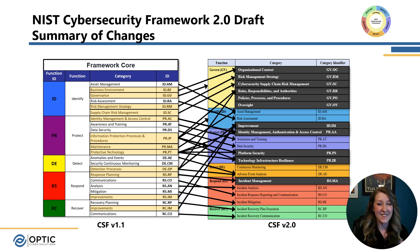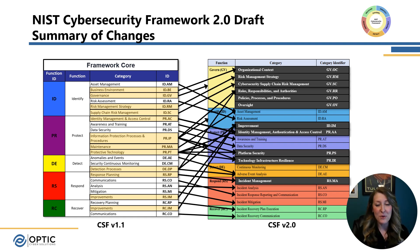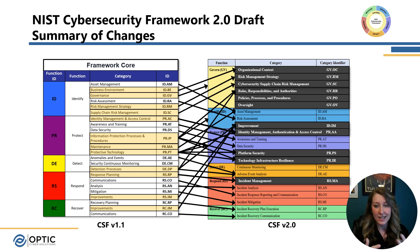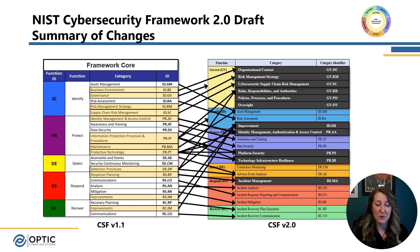Here I have the summary slide that provides an overview of everything I've seen that's moved and been added from a category level. We can see lots of arrows moving back and forth, and hopefully this helps provide just a little bit of context for what's changing and where it's changing or moving to.